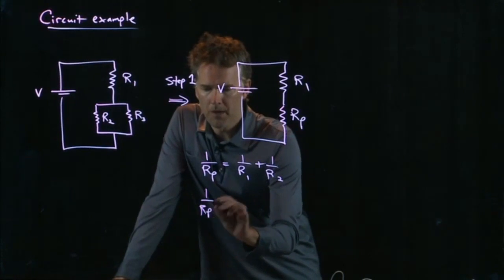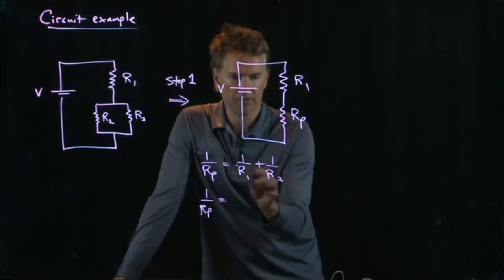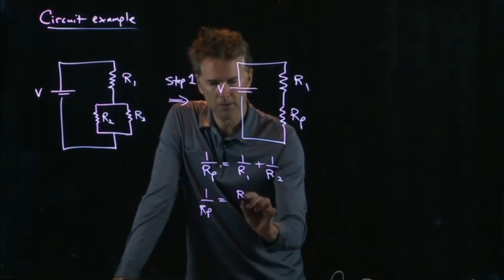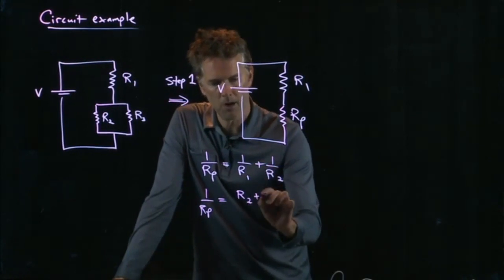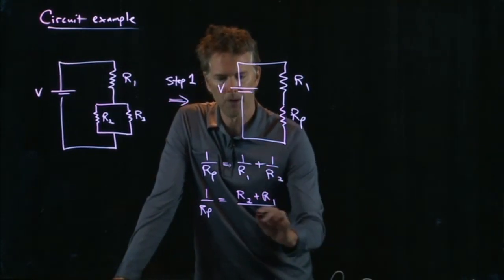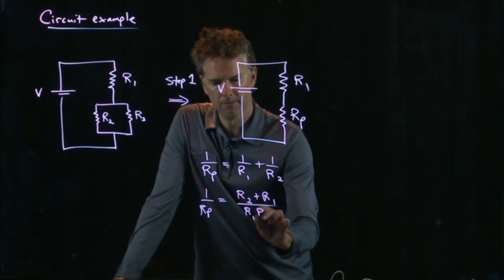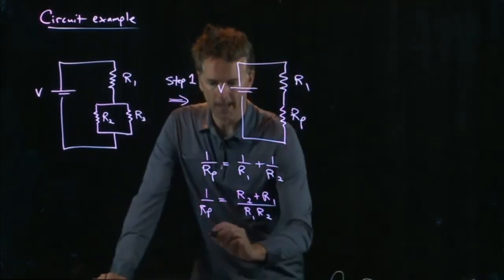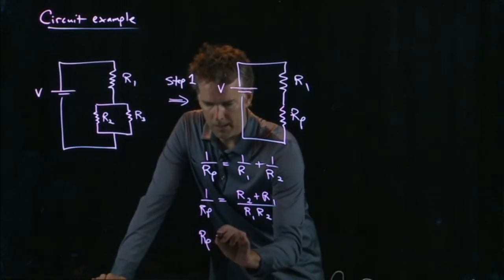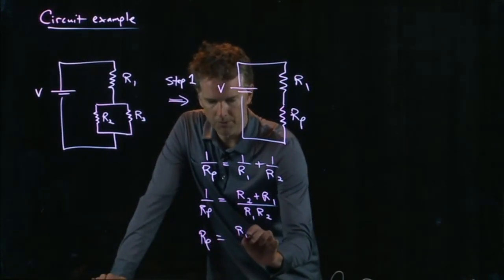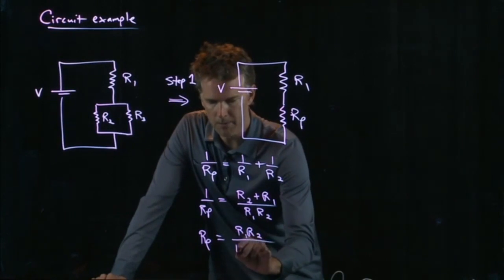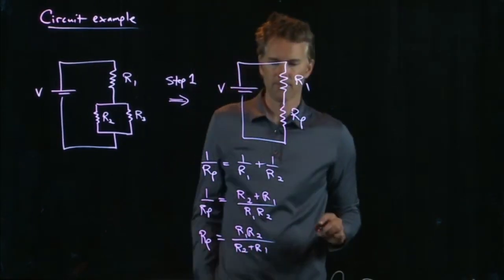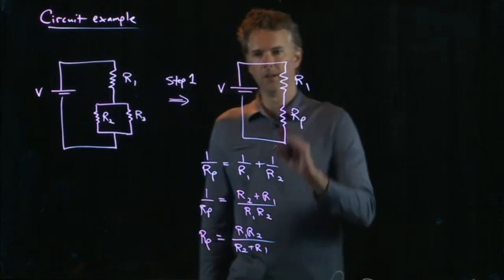I multiply by R2 up there, I multiply by R1 up there, and then I put a common denominator. And then I can flip the right and the left. And so we get Rp is equal to R1 R2 divided by R2 plus R1. That's what Rp is.